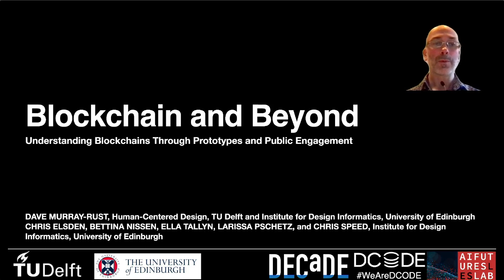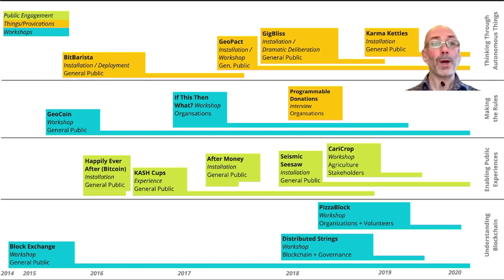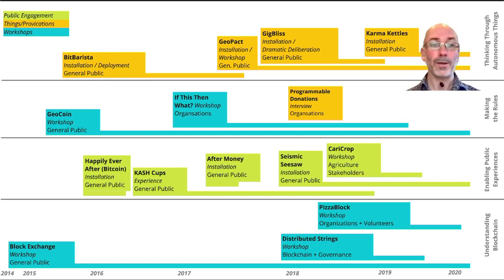This paper is an annotated portfolio. We present a collection of work covering approximately five years, primarily from multiple researchers in the Design Informatics research group at the University of Edinburgh. Many of these projects have been presented at CHI and other venues, and you'll see the references alongside the slides.